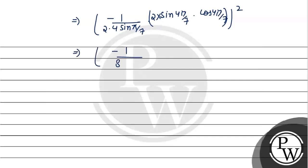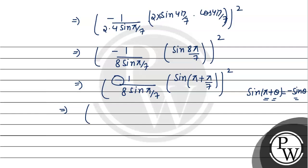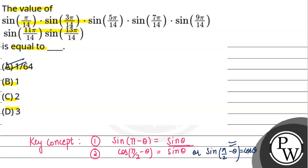So we get (1/8) · sin(π/7) / sin(π/7) = 1/8, raised to the power 2. After squaring, sin(π/7) cancels and we get 1/8 squared = 1/64. This is our final answer. The correct option is Option A. Hope you understand — best of luck!